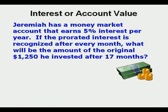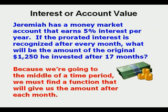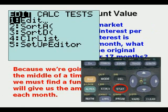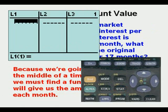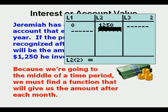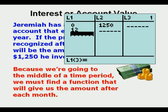Because we are going to the middle of a time period, we must find a function that will give us the amount after each month. We are going to go to Stat, Enter, and at time 0, Jeremiah had $1,250. Now, how many months later is one year? It's going to be 12 months later, so we put in 12.